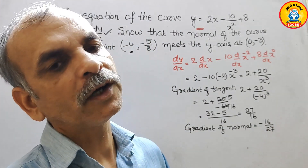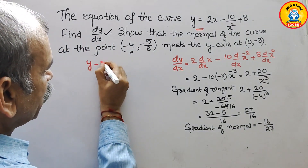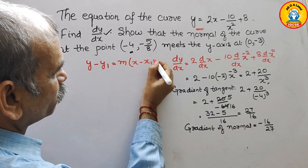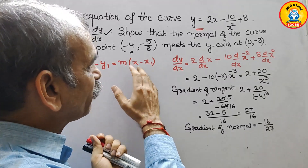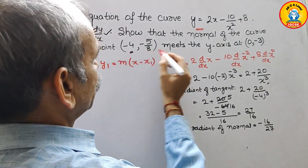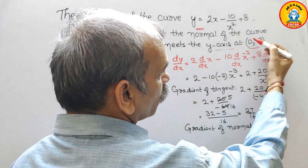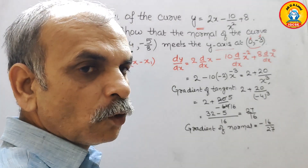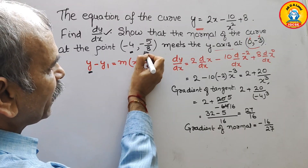Now we will go for the equation of a normal. That is nothing but y minus y₁ equals m times x minus x₁. So we will write the equation of the normal. We know that y is minus 5 by 8, so here we will substitute that as minus 5 by 8.